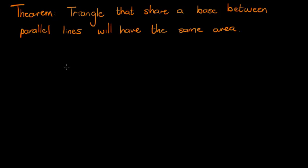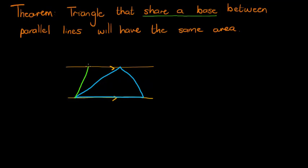So basically what we mean is that if we have two parallel lines, and we draw a triangle between them, like that, and another triangle that shares a base, so that's the first thing, they share a base, and they are between the parallel lines, so this one maybe goes up there to there. And these two triangles will have the same area.